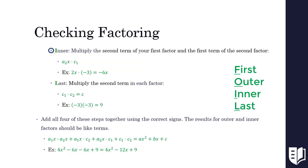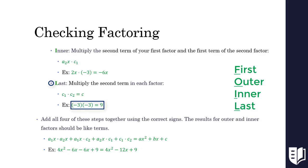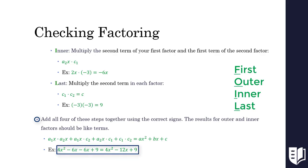Then, we multiply our inner factors, which are the second term in our first binomial and the first term in our second binomial. In our example, our inner factors are the same, so we get another negative 6x. Finally, we multiply the last term in each factor: negative 3 times negative 3 gives us 9. After we do this, we add the results of our inner and outer factors, because they're like terms. Adding 4x squared minus 6x minus 6x plus 9 gives us back our original quadratic expression of 4x squared minus 12x plus 9.